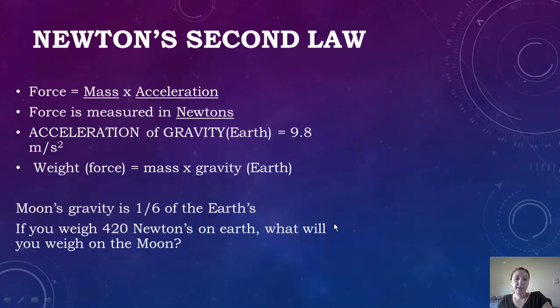So let's look at this quick question. A moon's gravity is one-sixth of the Earth. If you weigh 420 Newtons on Earth, what will you weigh on the moon? So if you said 70 Newtons, you're correct. So basically you would just take 420 and divide it by 6, and that would give you 70 Newtons.